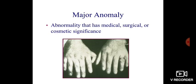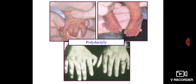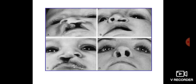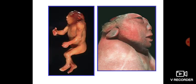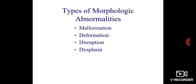Major abnormalities are those that have medical, surgical, or cosmetic significance, such as polydactyly, cleft lip and cleft palate, and anencephaly.